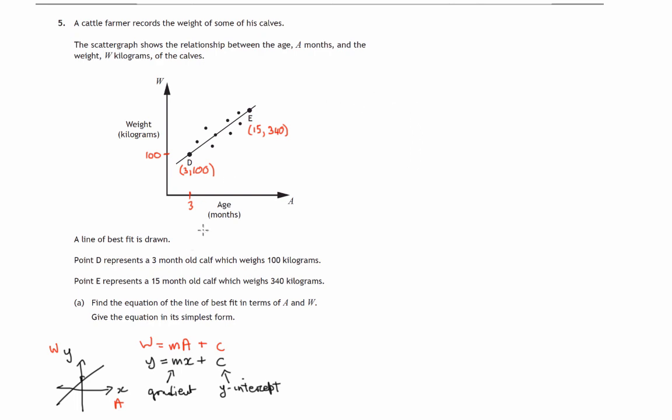So the first task would be to find the gradient of this line of best fit. So the gradient of the line joining D to E, and remember it's the y difference over the x difference. So the y difference 340 minus 100, and the x difference 15 minus 3.